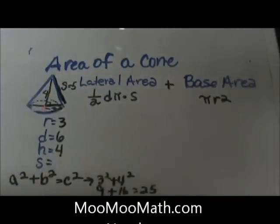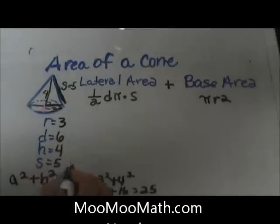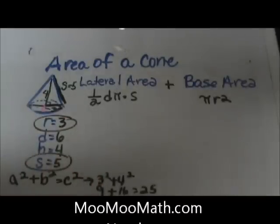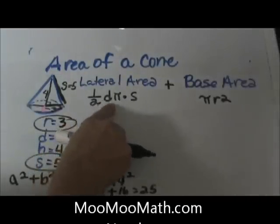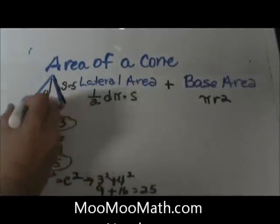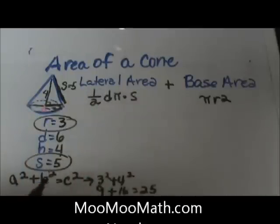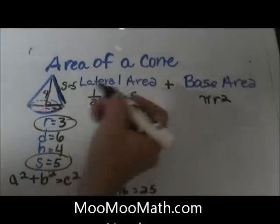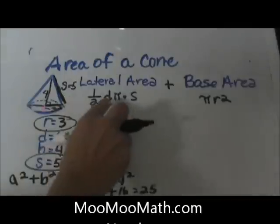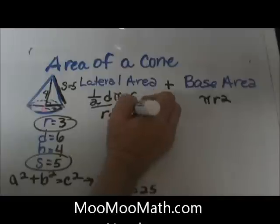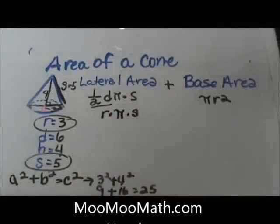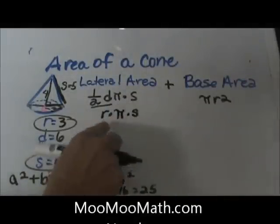So now let's go and plug in the slant height and our radius into the formula. Now up here I've got the formula: one half the circumference of the circle which is dπ times the slant height. I'm actually going to simplify the formula a little bit. Half of the diameter is equal to the radius. So the radius times π times the slant height is a simpler form of the formula. Then I'm just going to rearrange that so my π is in front.